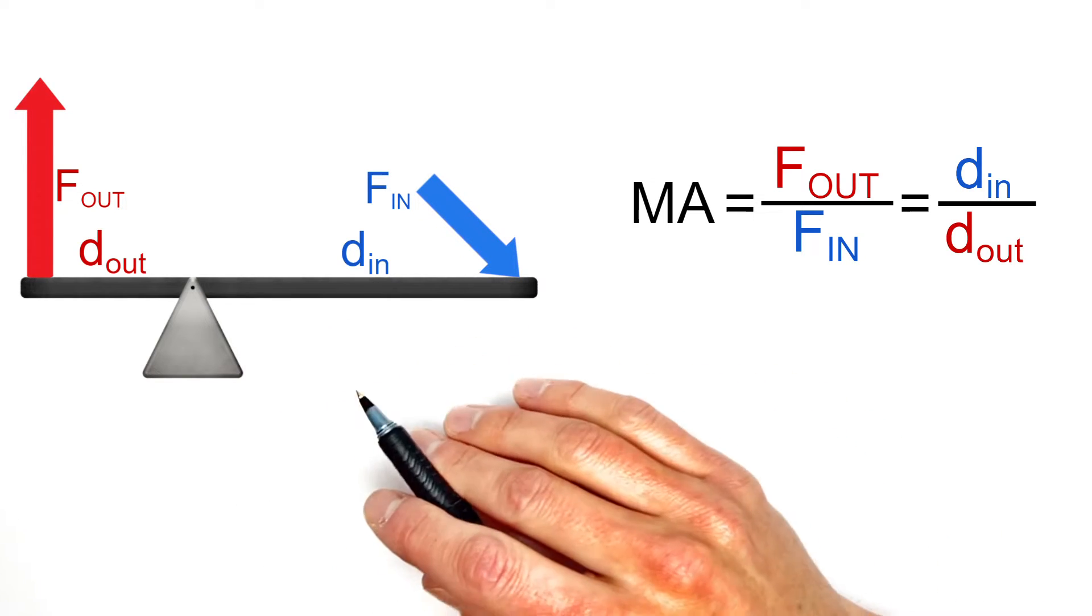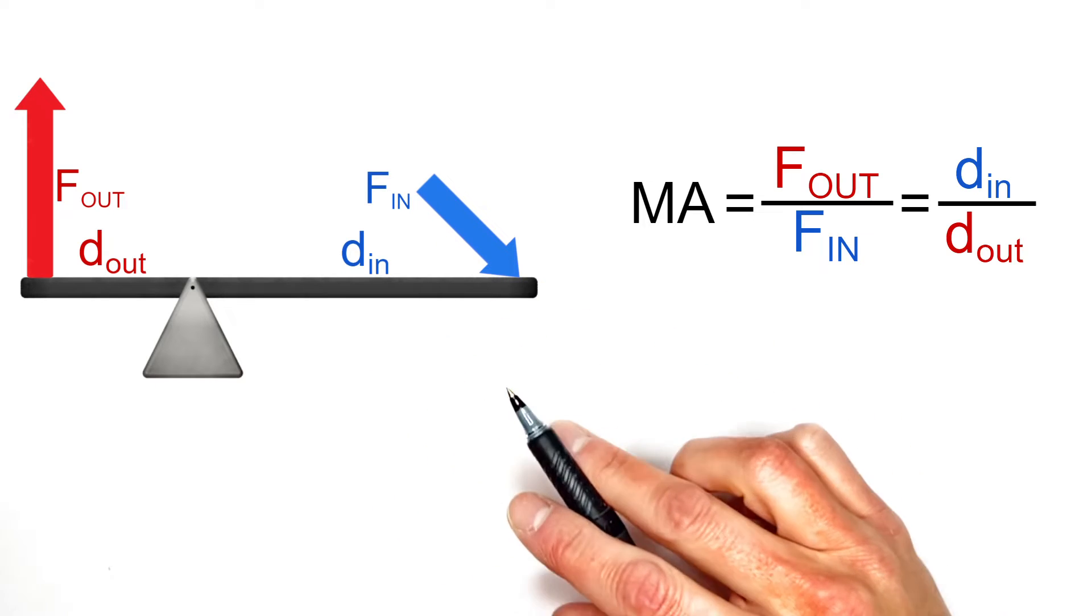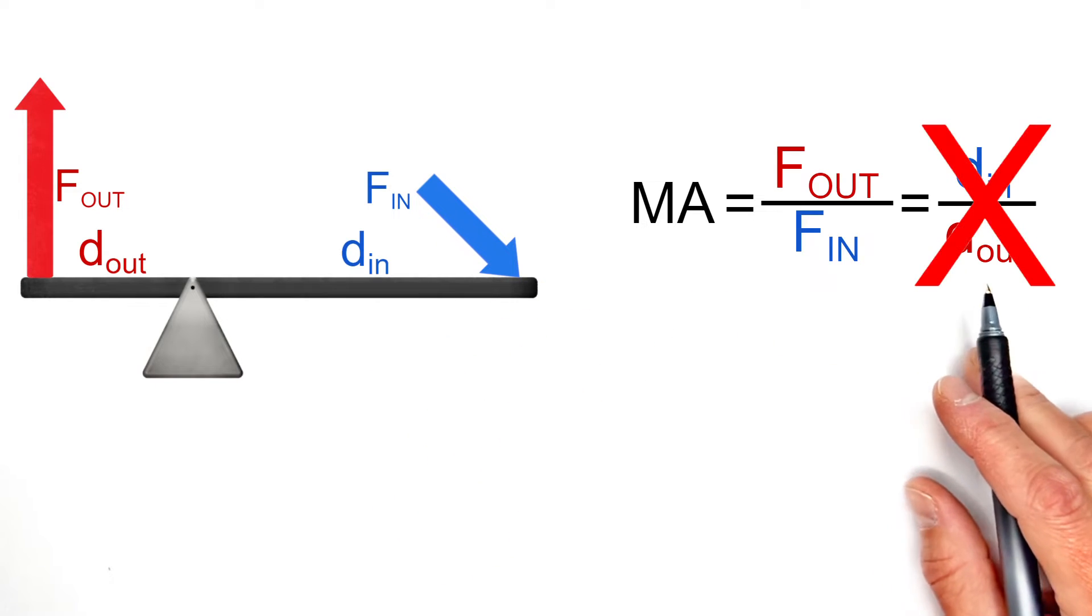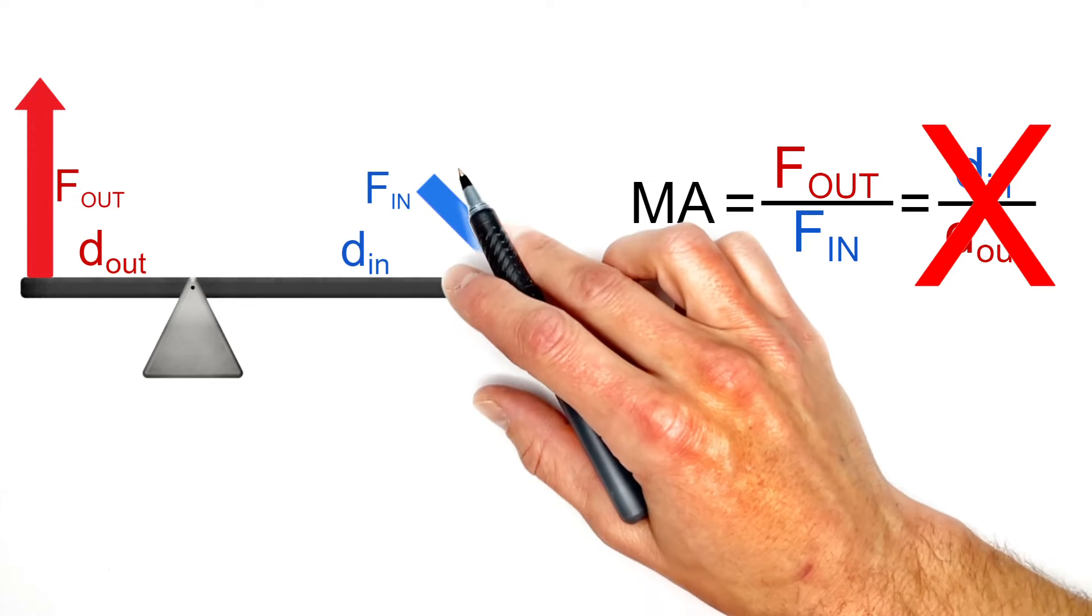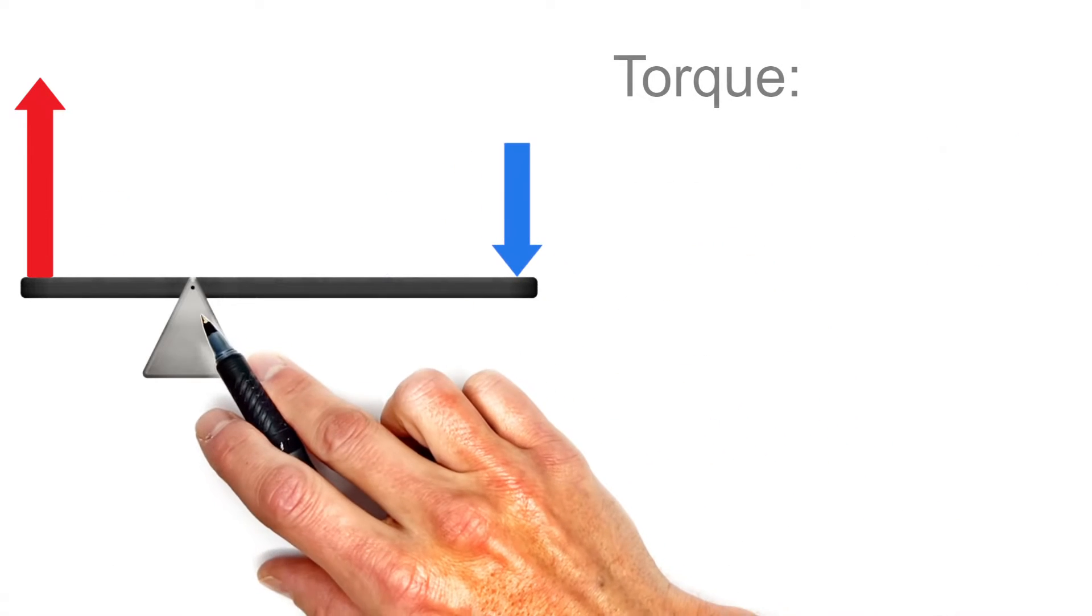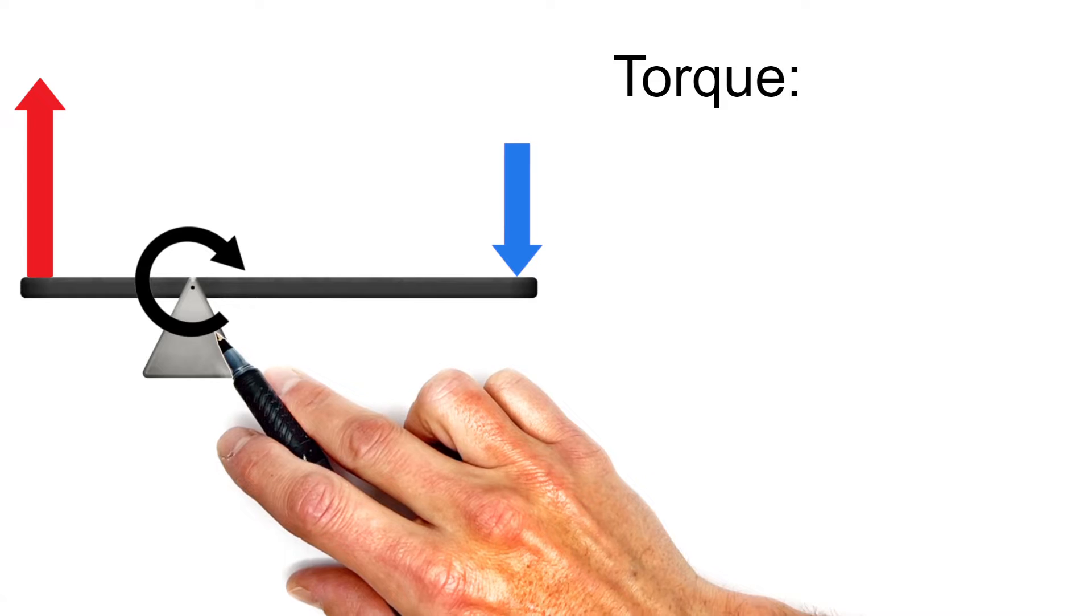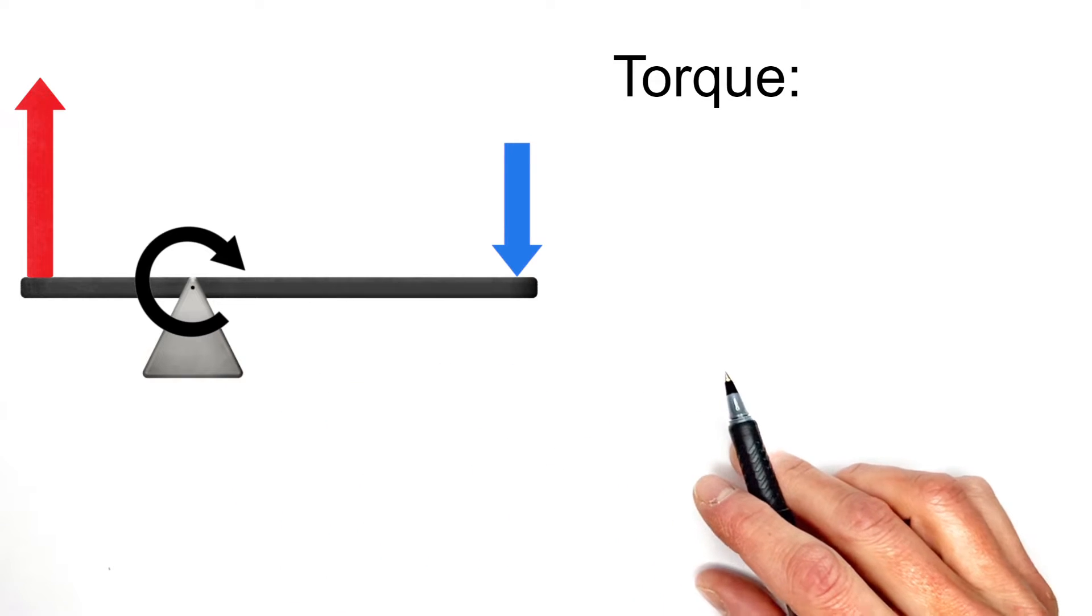The problem is, if either of these forces are not perpendicular to the lever, this equation over here no longer applies. See, this input force produces a torque or a twisting moment around the pivot point of the lever, no different than a wrench produces a torque on a bolt.